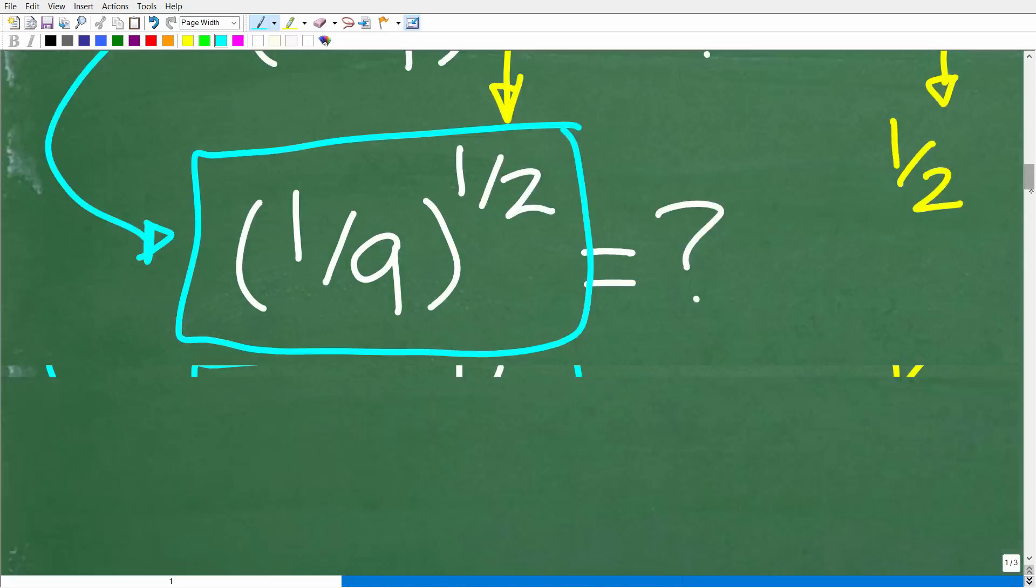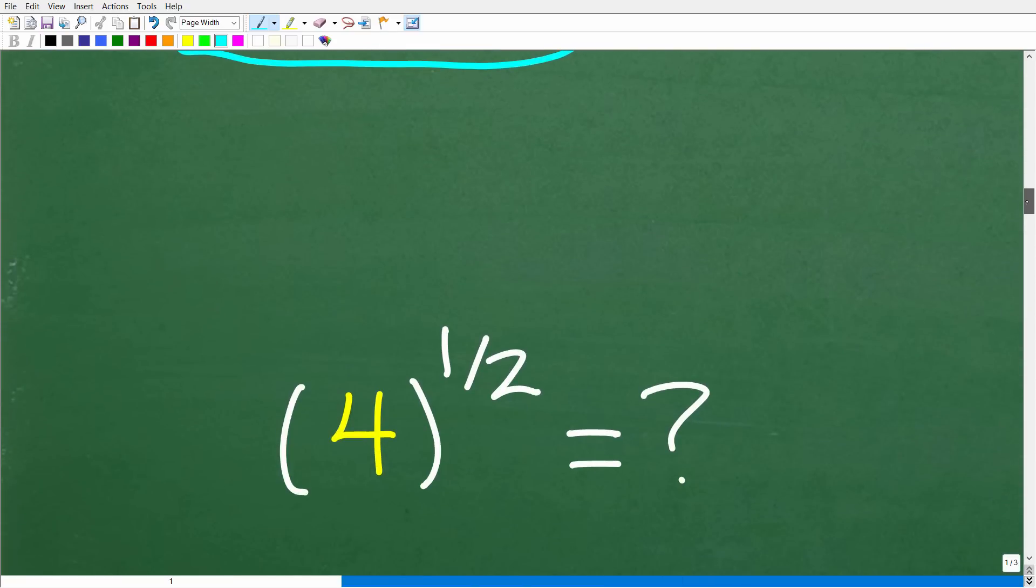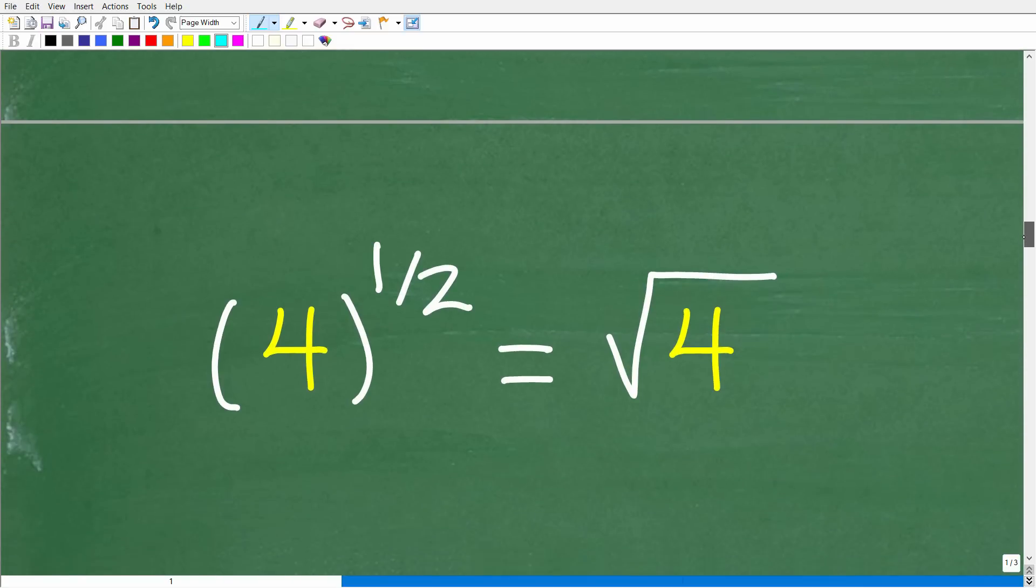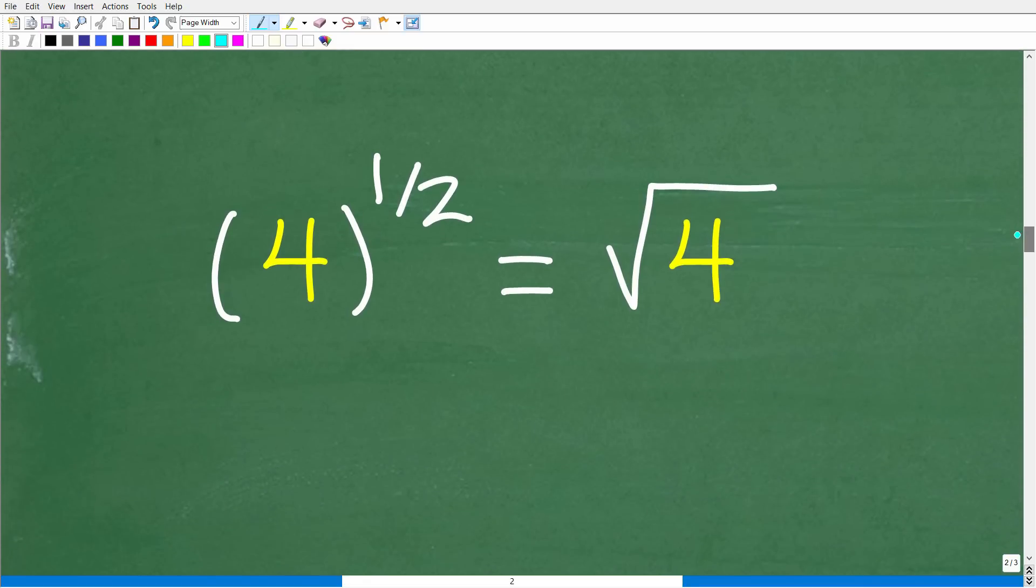So hopefully you know what it means to take a base to a power of 1/2. In other words, when we have an exponent of 1/2, what does this mean? Well, it means taking the square root. So for example, 4 to the 1/2 power is the same thing as the square root of 4.